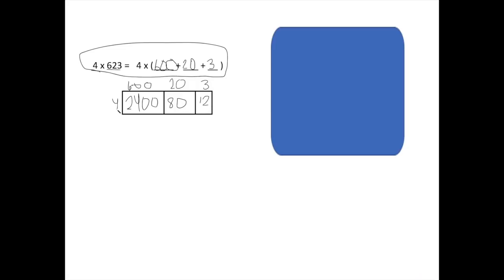So we found our partial products, but we don't have our full product yet. And our last step is we need to add our partial products. So this is where we need to write out our addition problem. Now, it could be tempting to add this in our brains, but make sure that you're really double checking your work and writing it out. So, 2400 plus 80 plus 12. Add it together.